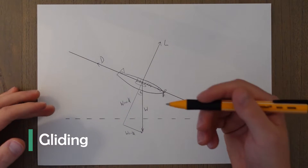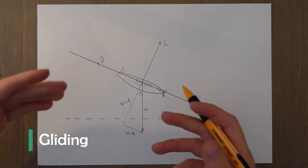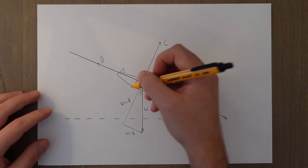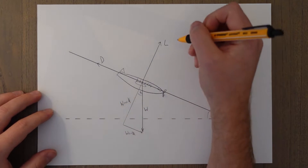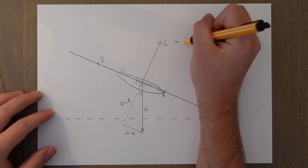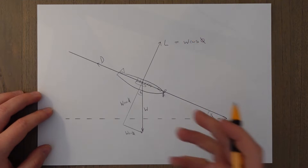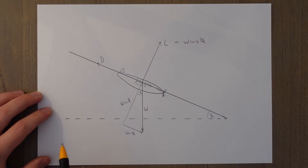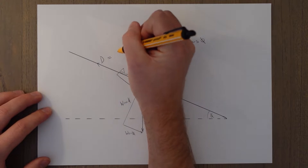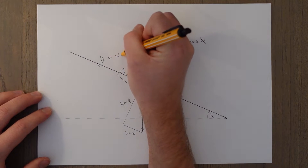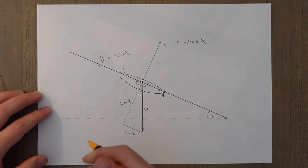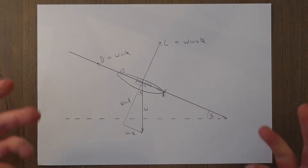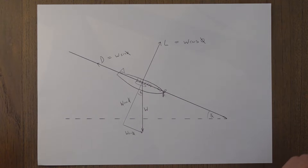Gliding is very similar to descending, but we have no thrust to account for. Our lift is only equal to the W cosine theta element, but the component acting down the slope only has to balance out the drag — so drag equals W sine theta. There's no thrust to think of because we're gliding: a descent without thrust.